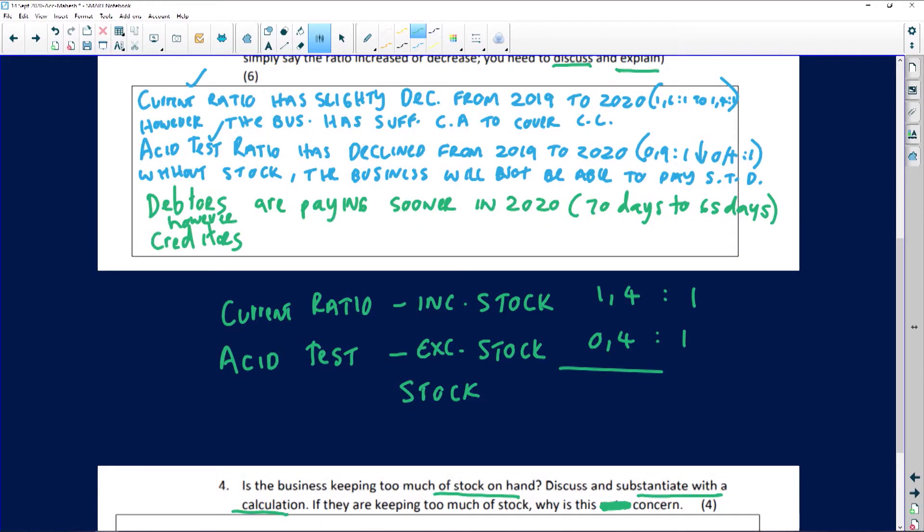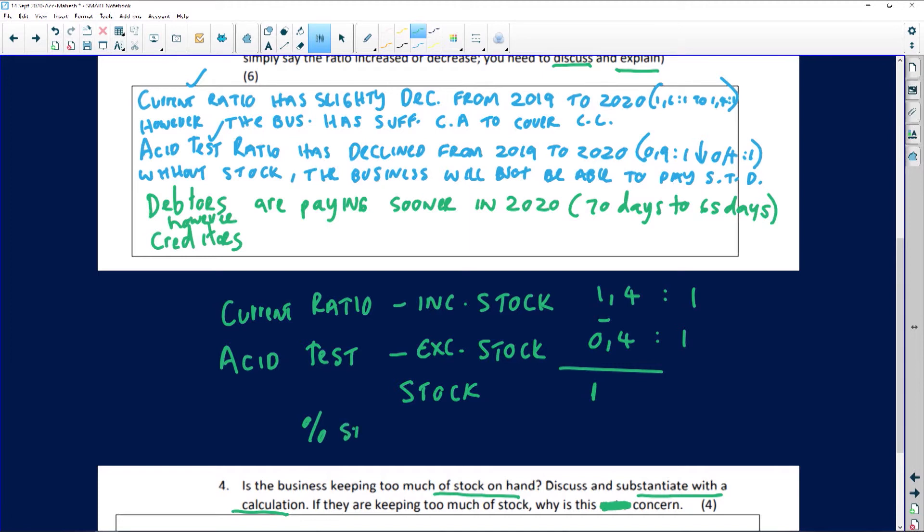So looking at your stock, 1.4 with stock, 0.4 without trading stock. So obviously if I subtract, my inventory or my trading stock is sitting at 1. Now remember 1 is obviously a ratio. So if I want to calculate the percentage of stock, so let's do that, the percentage of amount of stock the business is keeping, I am going to take stock which is 1, divide that by current ratio which includes stock.